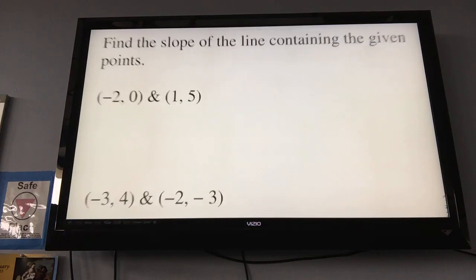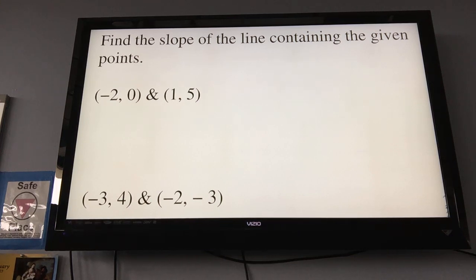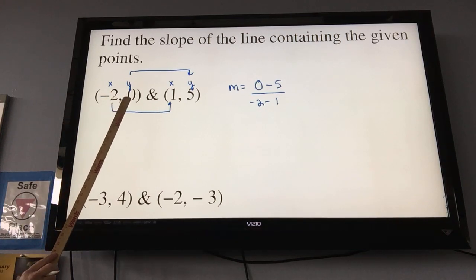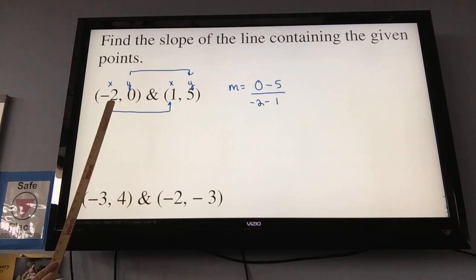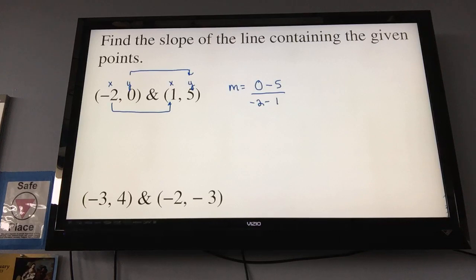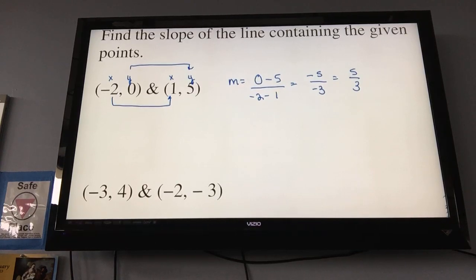Okay, so we're going to find the slope. So again, remember, it doesn't matter which y and x you begin with as long as you do it the same for both. So I'm going to take y minus y. So 0 minus 5 over negative 2 minus 1. So I'm taking my y minus the other y, and then my x minus the other x. And I just do the calculation, negative 5 over negative 3, which we will always simplify to positive. Negative divided by negative is a positive. My answer is five-thirds. Leave it as an improper fraction.